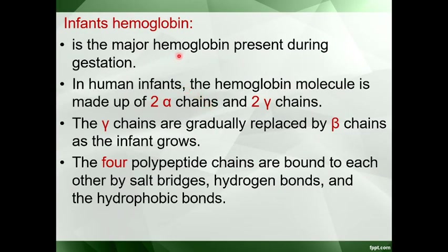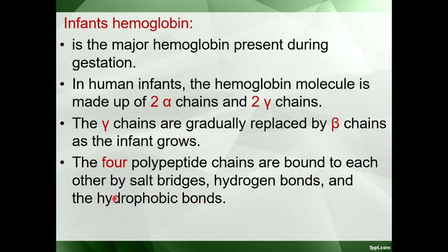Fetal hemoglobin is the major hemoglobin present during gestation. In human infants, the hemoglobin molecule is made up of 2 alpha and 2 gamma chains. Alpha, beta, and gamma chains differ from each other on the basis of amino acid composition. The gamma chains are gradually replaced by the beta chains as the infant grows, since normal adult hemoglobin contains alpha and beta chains. The four polypeptide chains are bound to each other by salt bridges, hydrogen bonds, and hydrophobic bonds.